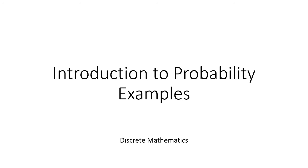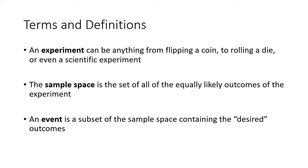In this video, I'll talk about some basic probability concepts and work through some example problems. Some definitions that we're going to be using are that when we have an experiment, that's anything from flipping a coin, rolling a die, or even a scientific experiment — something that's repeatable where we want to try to understand what we can expect the outcomes of that experiment to be.